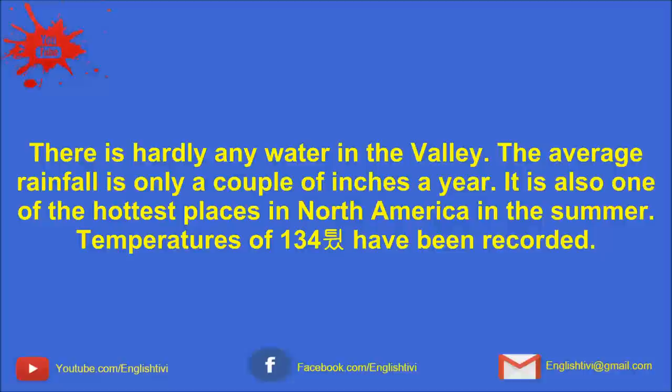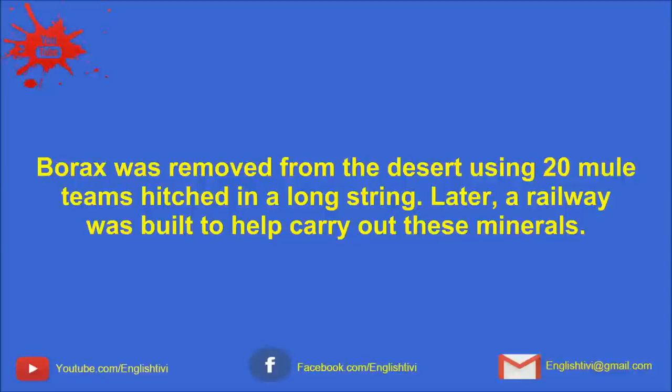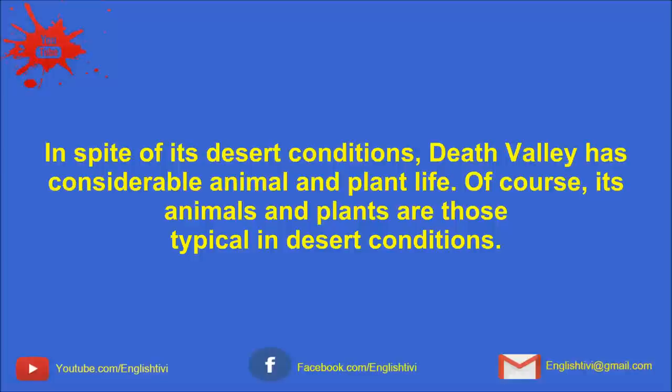There is hardly any water in the valley. The average rainfall is only a couple of inches a year. It is also one of the hottest places in North America in the summer. Temperatures of 134 Fahrenheit have been recorded. As a result of this heat and dryness, Death Valley is a desert. These conditions give rise to the valley's most important products: mineral salts and salt deposits. One of these products is borax, which has many industrial uses. Borax was removed from the desert using 20 mule teams hitched in a long string. Later, a railway was built to help carry out these minerals.